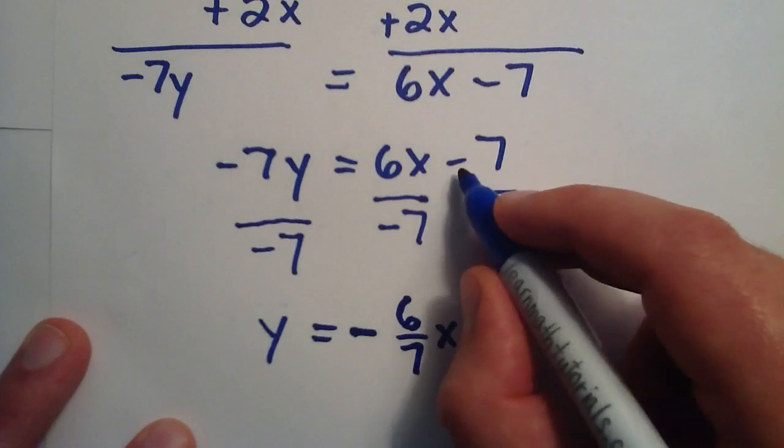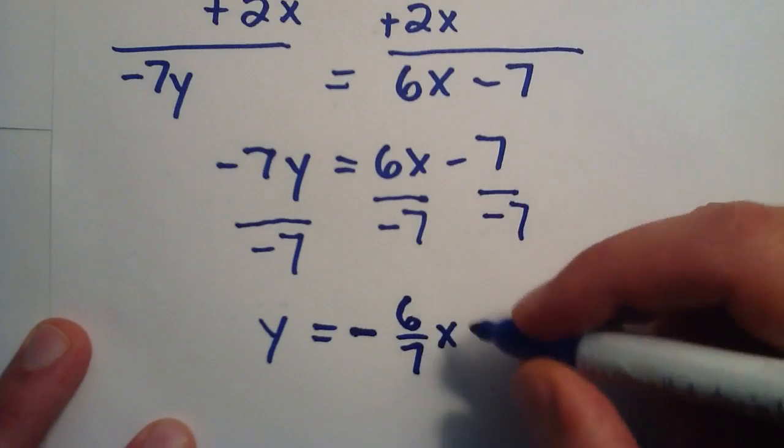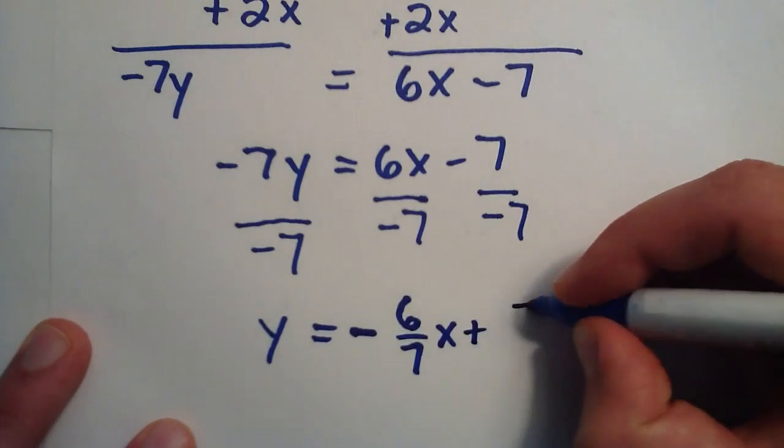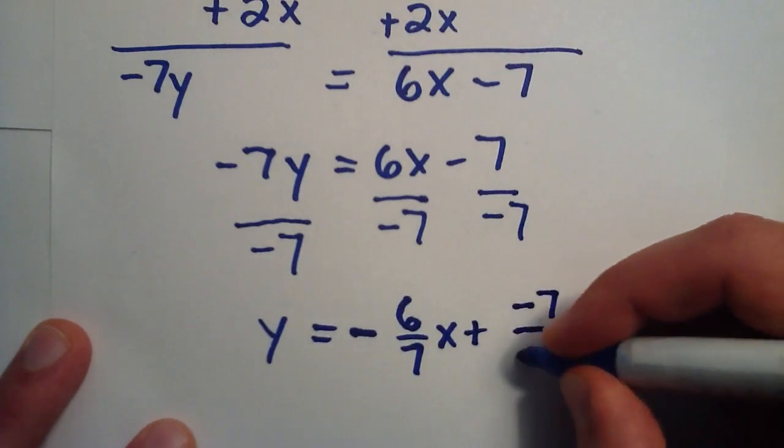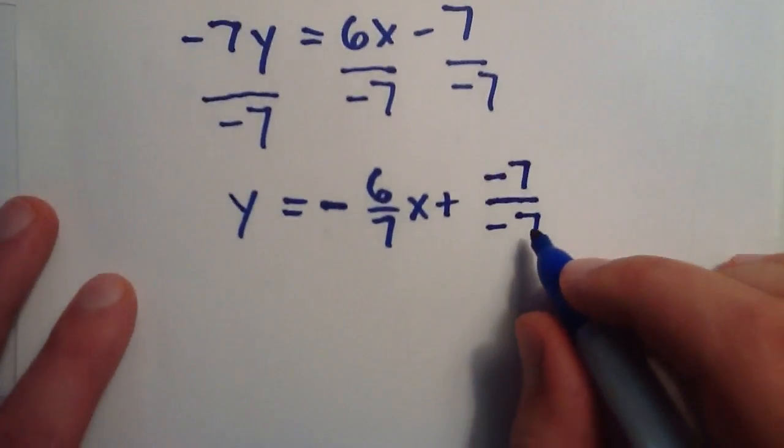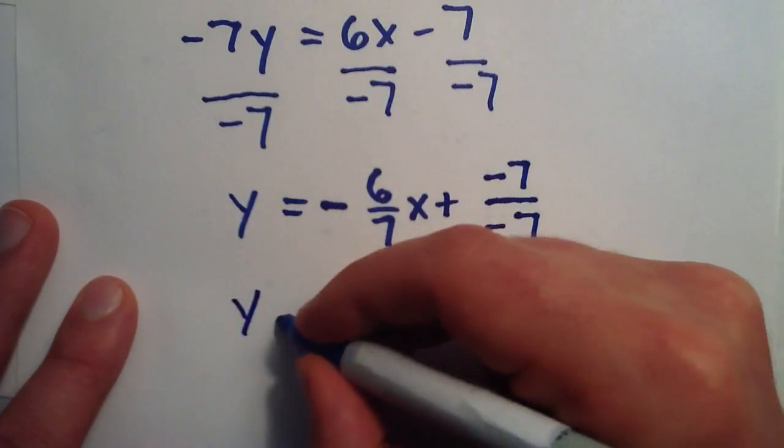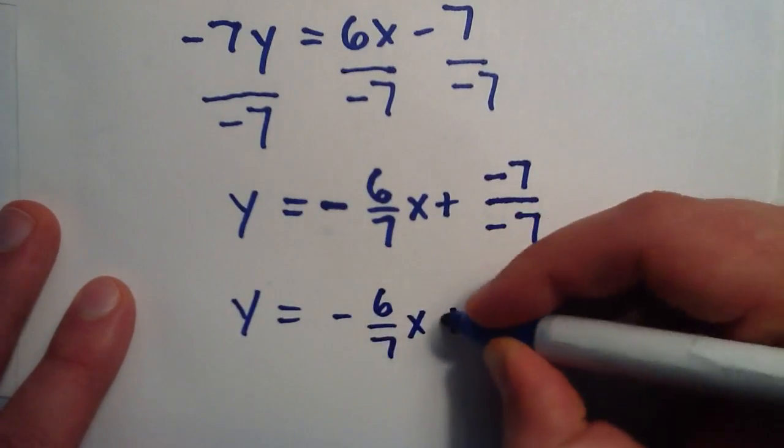And for this term we can move the negative sign into the numerator. And in order to do that we simply add and then we put the negative seven up top. And we just leave the bottom the same. Now any number divided by itself is simply one. So we can rewrite this as y equals negative six over seven x plus one.